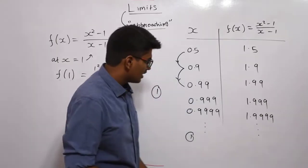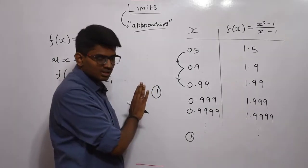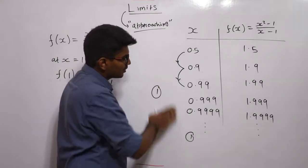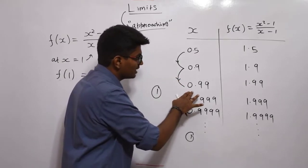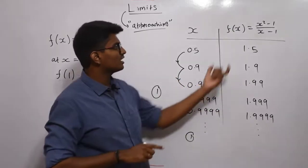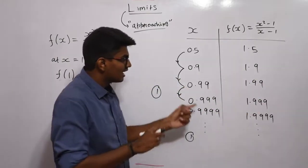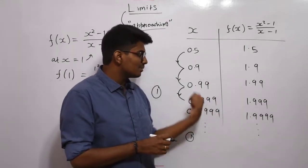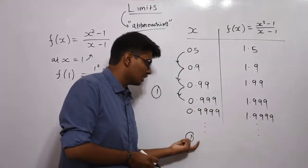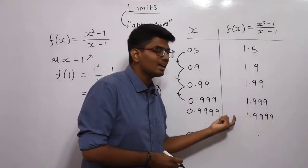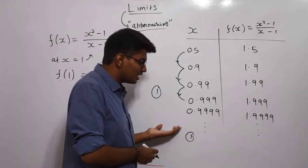Instead of directly substituting 1, I am approaching 1 from some other value. From 0.5 I approach 1, then 0.9, then 0.99. If I substitute 0.99 I am getting 1.99. And if I substitute 0.999 — which is still approaching closer — 0.999 is very close to 1, and 0.9999 is much closer than that. If I keep on approaching 1, what is happening to my f(x) value?